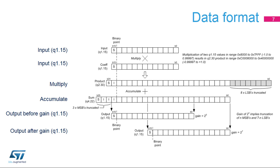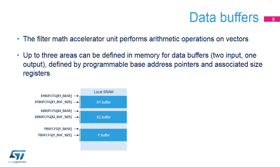The FMAC unit performs arithmetic operations on vectors, which are arrays of 16-bit fixed-point scalar values. These vectors are allocated in the local SRAM. Software is in charge of configuring the X1 and X2 operand buffers and Y output buffer through the X1_BUFF_CFG, X2_BUFF_CFG, and Y_BUFF_CFG registers. The base addresses can be chosen anywhere in internal memory provided that all buffers fit within the internal memory address range 0x0 to 0xFF.